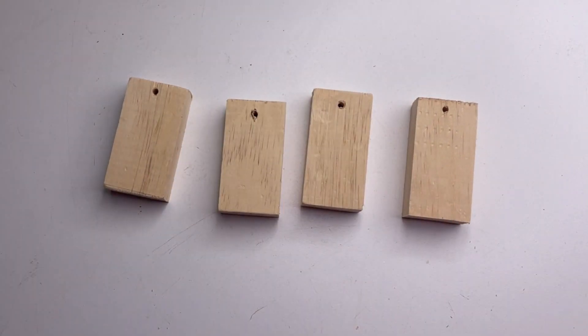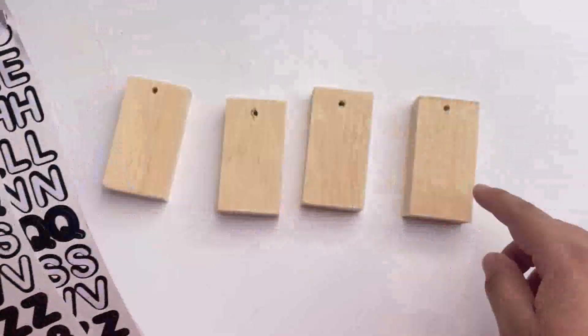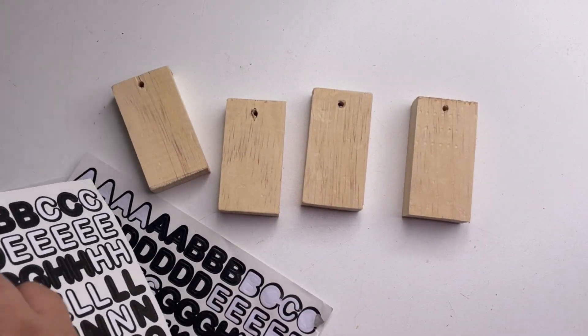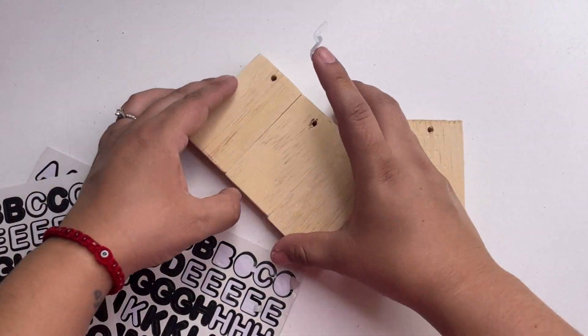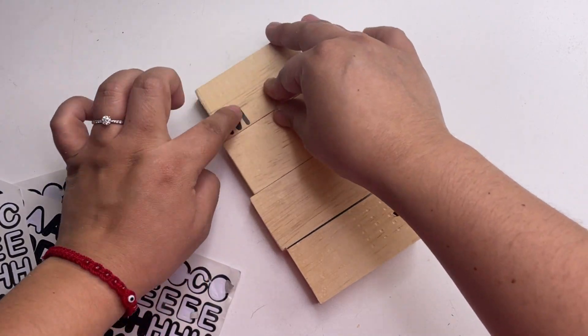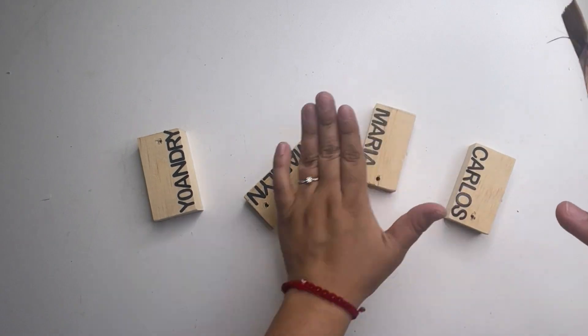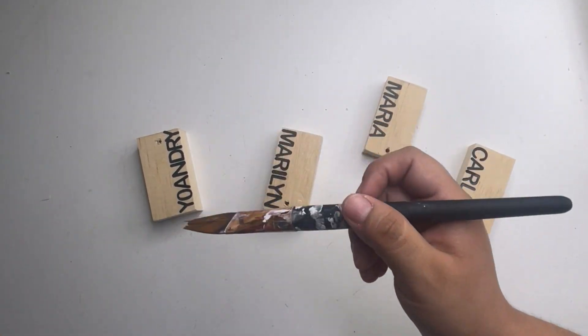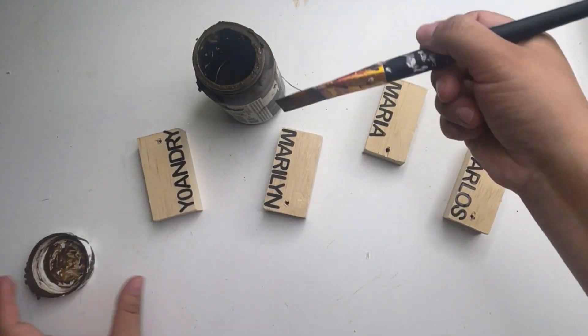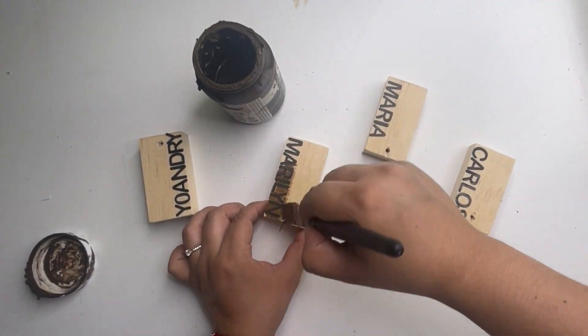This is how they look. Now I'm going to use these Dollar Tree stickers to add the names on the side. Now I got lucky enough that the names of each of my family members actually fitted in each little block. Once I was done adding the names, I then painted this using the Waverly antique wax. I am doing the reversible stencil.